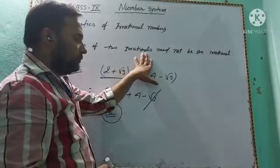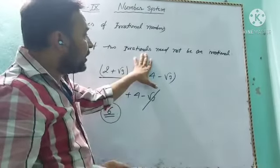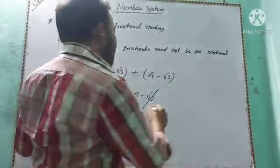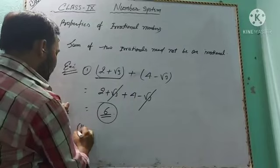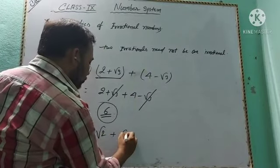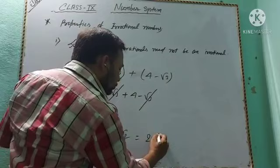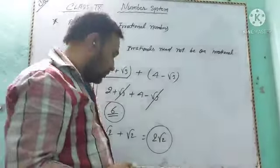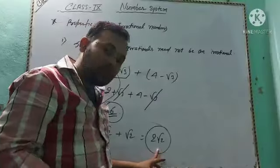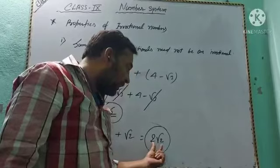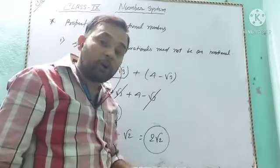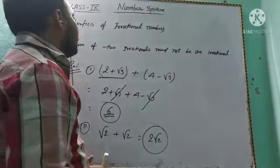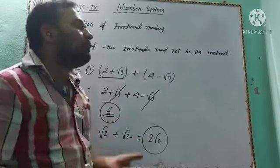Another example: √2 + √2 = 2√2, which is always irrational. So the sum of two irrationals need not be irrational — it can be either rational or irrational.